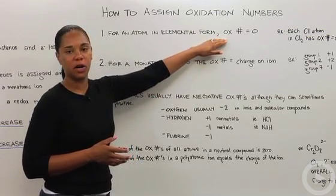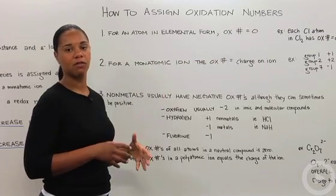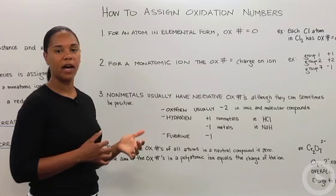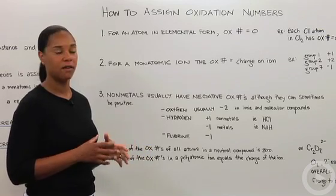For instance, if we're talking about the diatomic chlorine gas, Cl2, each chlorine atom in chlorine gas has an oxidation number of zero.